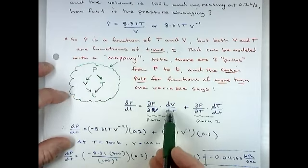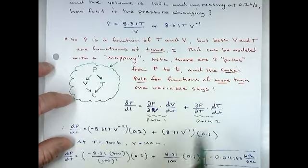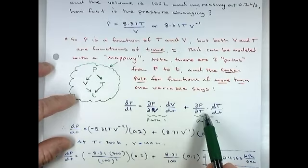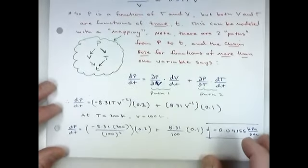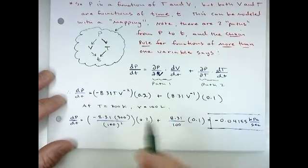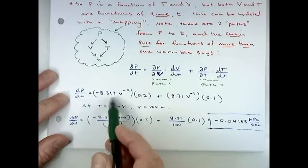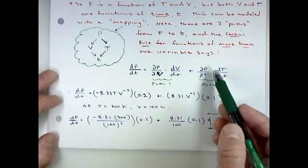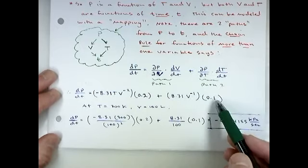This first term represents the volume's effect on the pressure. Then we also include the temperature's effect on how the pressure is changing, and we add those two together. So the second term is the partial of pressure with respect to temperature, times the derivative of temperature with respect to time. Working this out: the partial with respect to V treats T as a constant, giving negative 8.31T · V^(−2), times dV/dt. The partial of P with respect to T treats V as constant, giving 8.31V^(−1), times dT/dt.